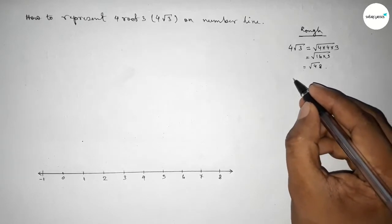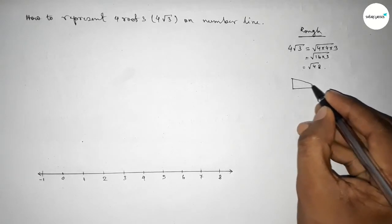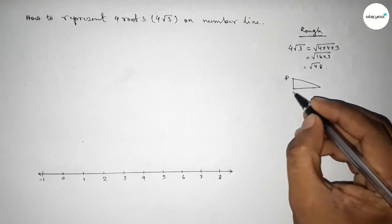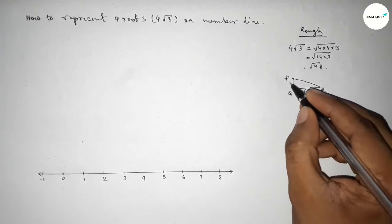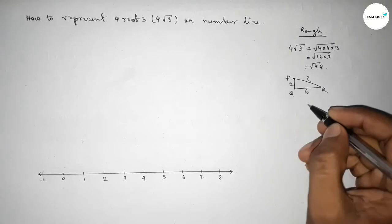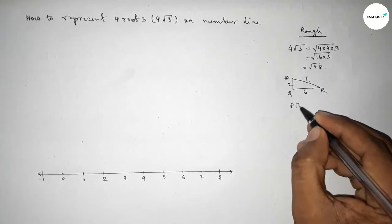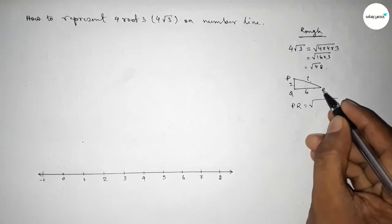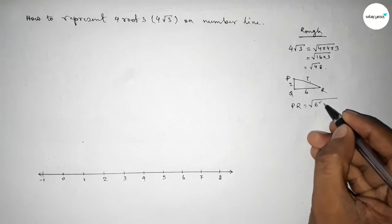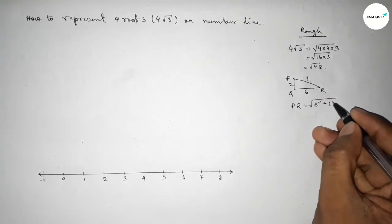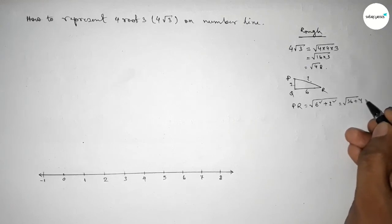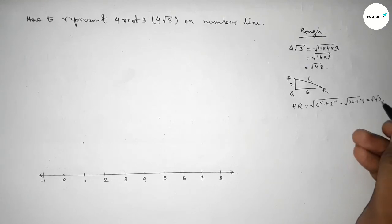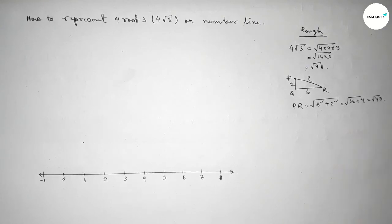First we have to represent √40. Roughly drawing a right angle triangle PQR with base equal to 6 and height equal to 2. By Pythagoras theorem, hypotenuse PR = √(6² + 2²) = √(36 + 4) = √40.